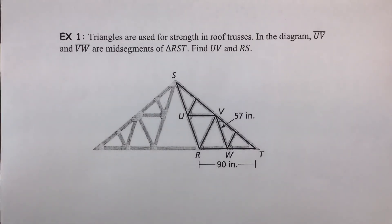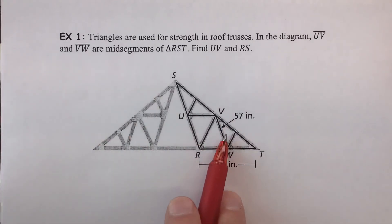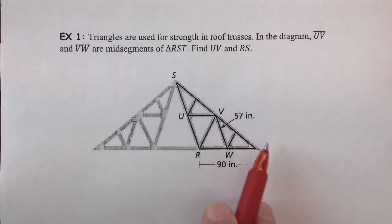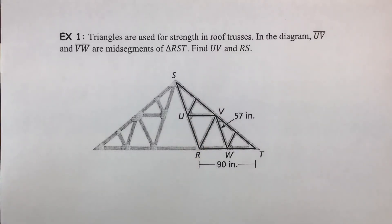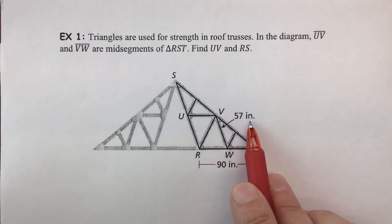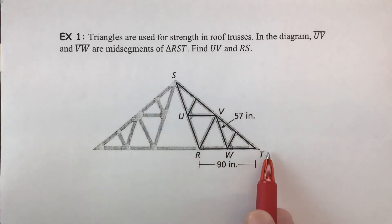Example one: triangles are used for strengthening roof trusses. In the diagram, segment UV and segment VW are midsegments of triangle RST. UV is here and VW is over here, outlining triangle RST. We are asked to figure out what UV and RS are — that is, the lengths of those segments. Recall from our theorem that a midsegment is half the length of the side it runs parallel to.